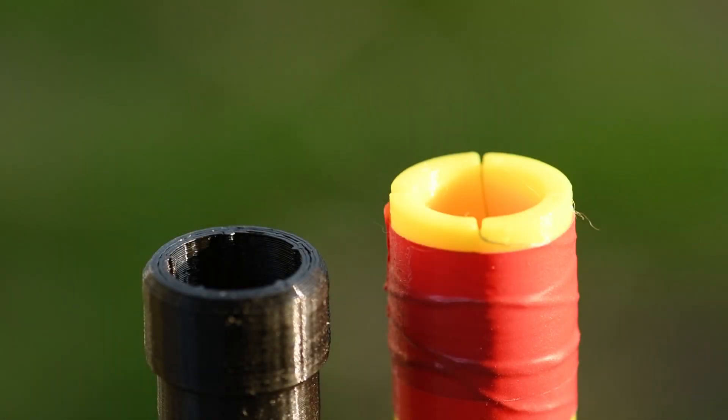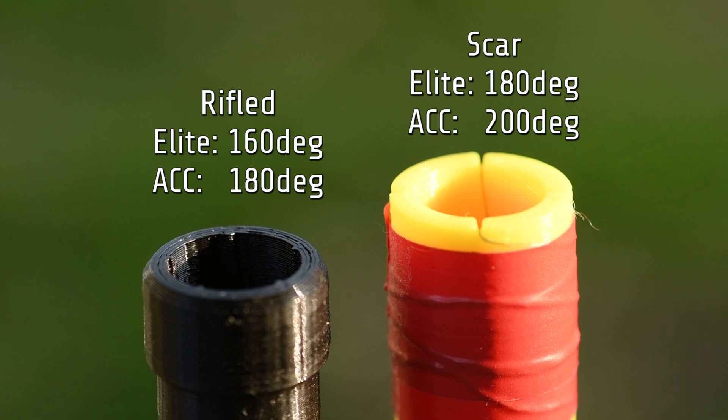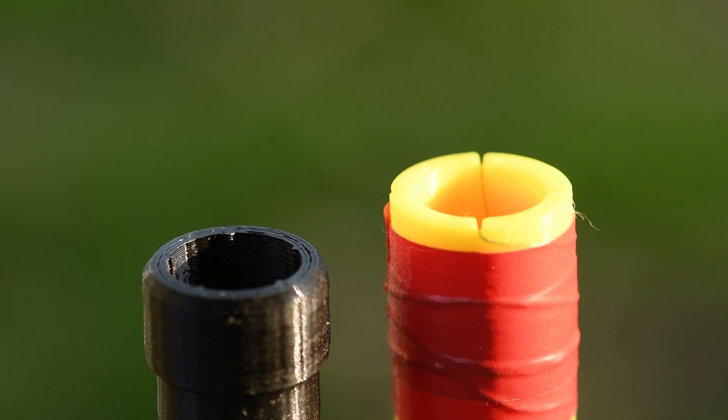From this simple test it would go to show that the scar will add more accuracy to your shots than the rifled barrel does. However, the rifled barrel does still add spin to the dart, although it is slightly less. I hope you enjoyed this video and understand how simple it is to perform this test. Thank you for watching.